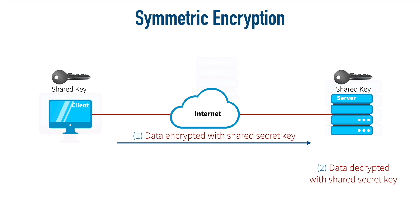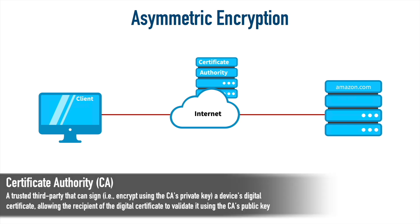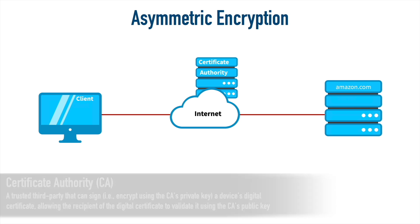Let's take a look at a common example of asymmetric encryption. We'll pretend we're going to go out to Amazon.com to buy something. In this topology, on the internet, we have a server labeled Certificate Authority — also called Certification Authority, or CA for short. That CA is a trusted third party. We know that if the CA says something sent from Amazon is really from Amazon, we can trust it.